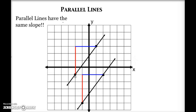I've made a slope triangle on both lines, where the red part is my rise and the blue part is my run. For the first line, my rise is going up 4, so it's positive 4. My run is to the right 3, so it's positive 3.